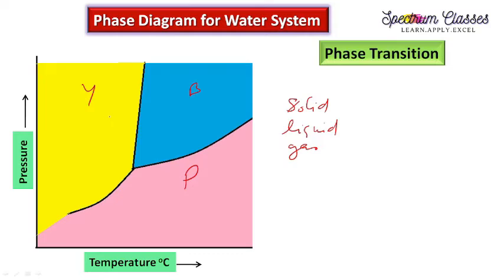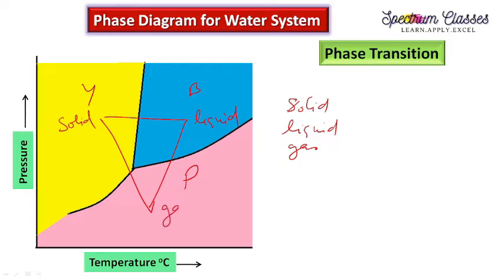You can memorize this if you draw a triangle like this: this will be your solid, this will be your liquid, and this will be your gas. Through this triangle you can easily memorize the phases, but it is also important to understand why each region corresponds to that phase.